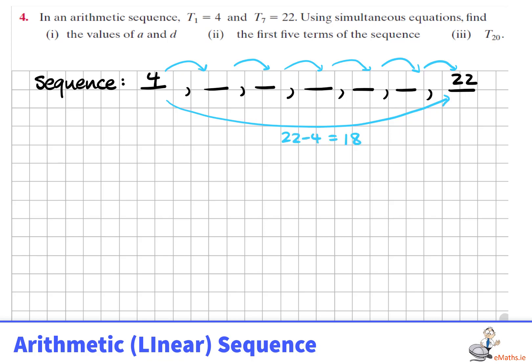We can see that the gap between 4 and 22 is a gap of 18. There are six steps between these, so each step must be adding 3, one-sixth of 18. So we could fill in what the other terms,